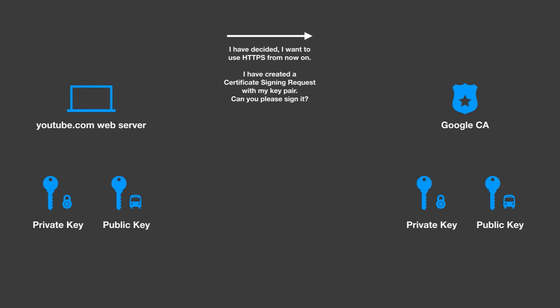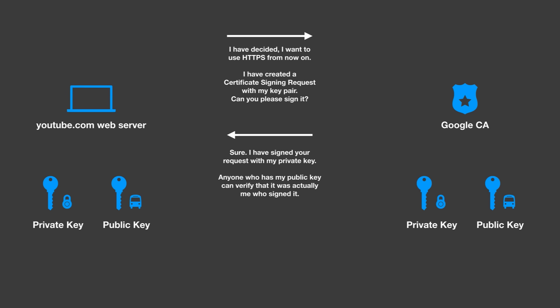So the youtube.com web server says, I've decided I want to use HTTPS from now on, I've created a certificate signing request with my key pair. Google certificate authority, can you please sign it? The Google certificate authority says, sure, I've signed your request with my private key. Anyone who has my public key can verify that it was actually me who signed this. Now most browsers, when they are delivered, already have a list of trusted certificates, and these certificates are issued by known certificate authorities. Google is one of them, and YouTube uses the Google one because YouTube belongs to Google, or belongs to Alphabet, and they have their own authority.